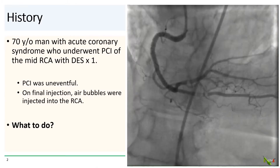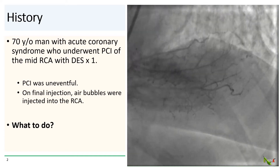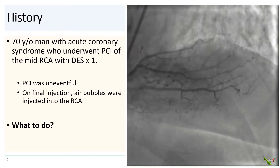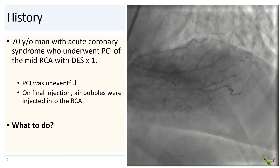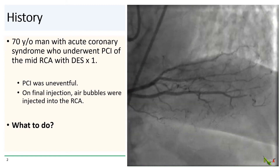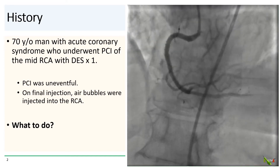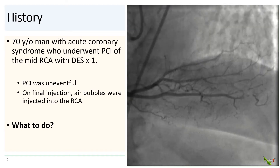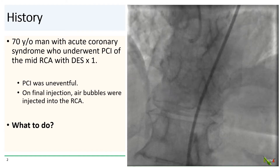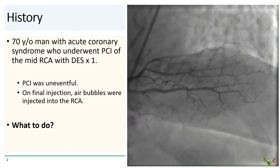Our patient is a 70-year-old man who presented with an acute coronary syndrome. He underwent fairly routine PCI of the mid-RCA. The PCI itself was uneventful. However, on final injection, a fairly substantial number of air bubbles were accidentally injected into the RCA. The patient became bradycardic. What should we do now?